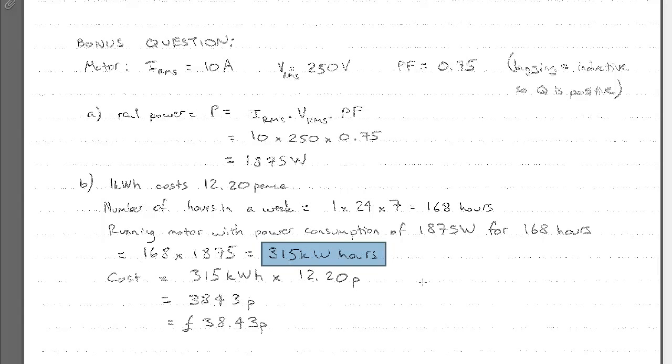So that's the first bit to get to that point. Now we know how many kilowatt hours we need to run it for this long. We can find out how much that's going to cost us. We know that one kilowatt hour costs us 12.20 pence, times that by the total number of hours gives us a value of 3843 pence,